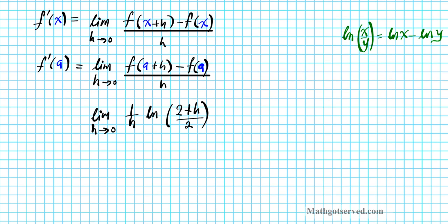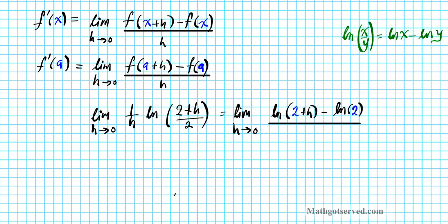So we're going to rewrite this in that form. The limit now becomes the limit as h approaches 0 of the natural logarithm of 2 plus h minus the natural logarithm of 2, and let me color code it here — the entire expression divided by h. So we distributed the 1 over h, multiplying through. Can you see how this fits the derivative definition form?